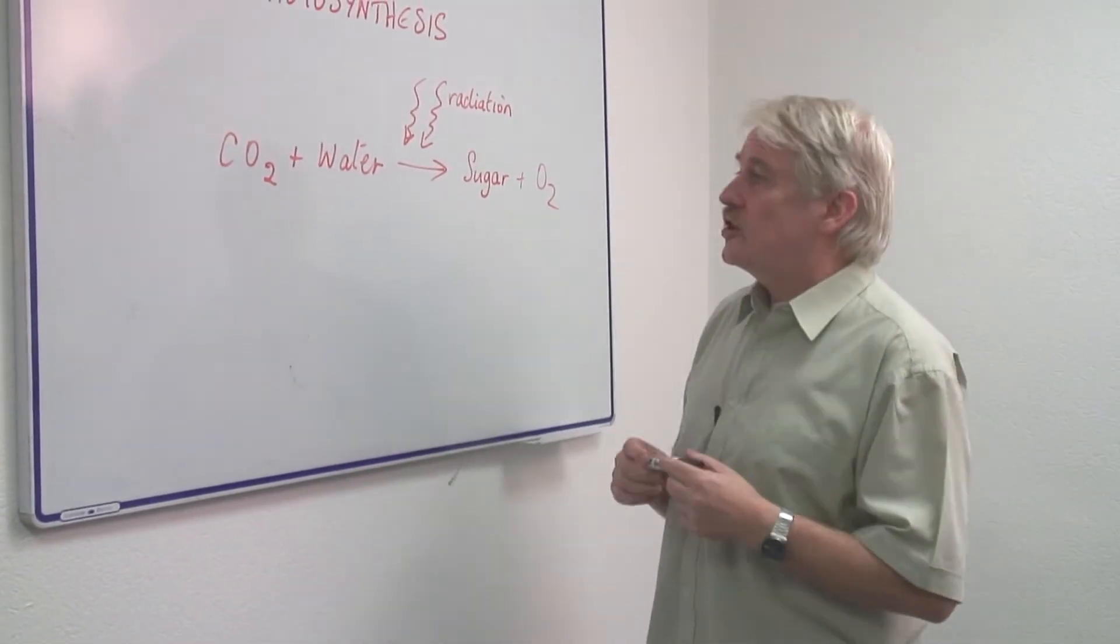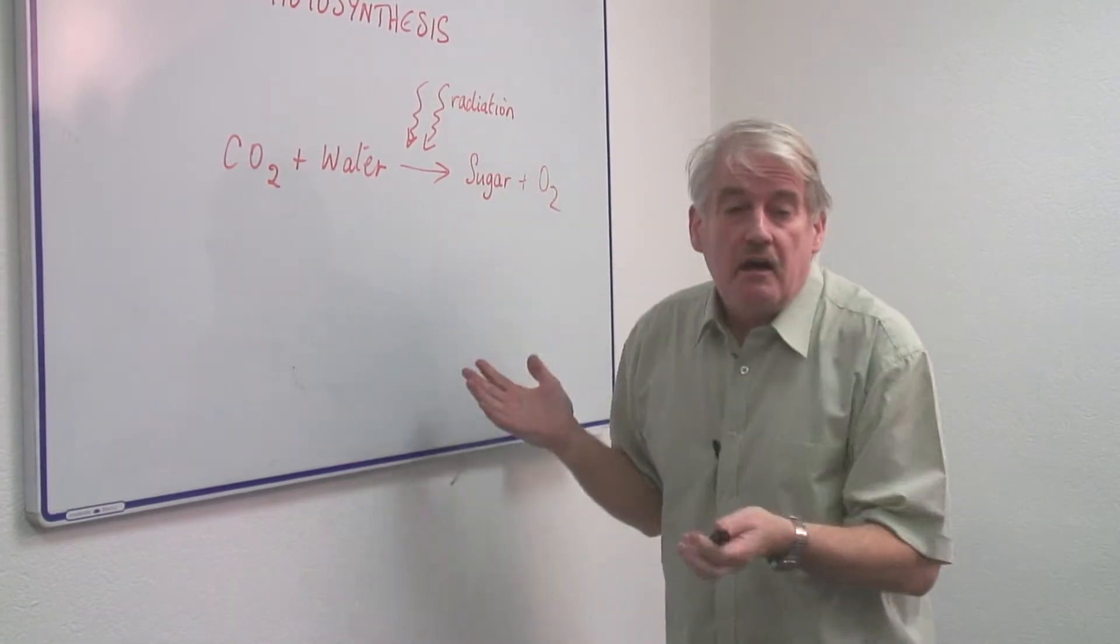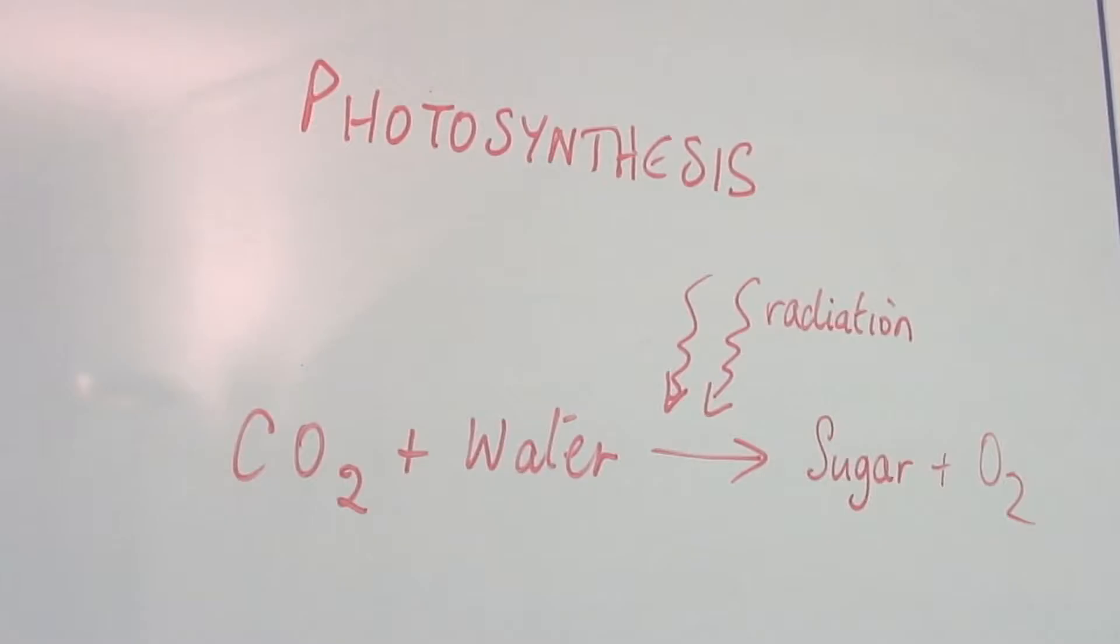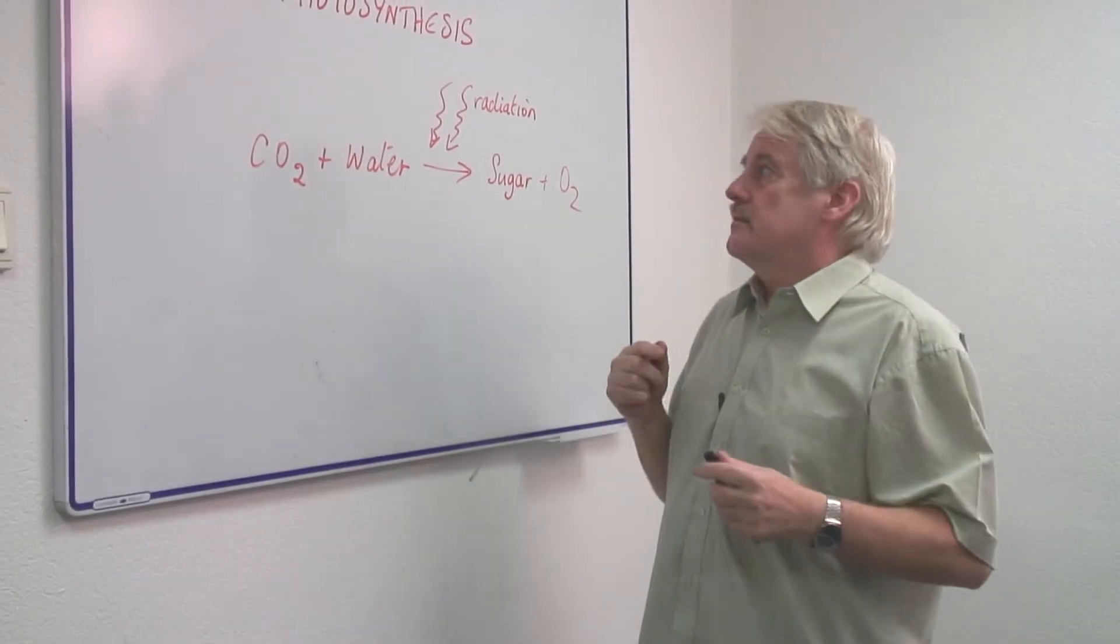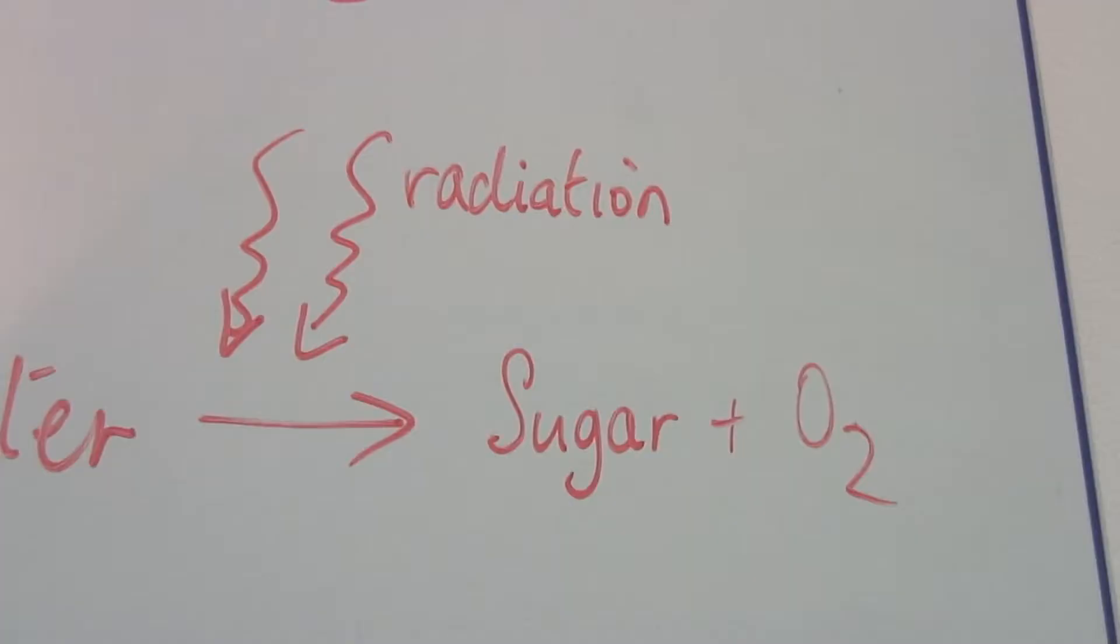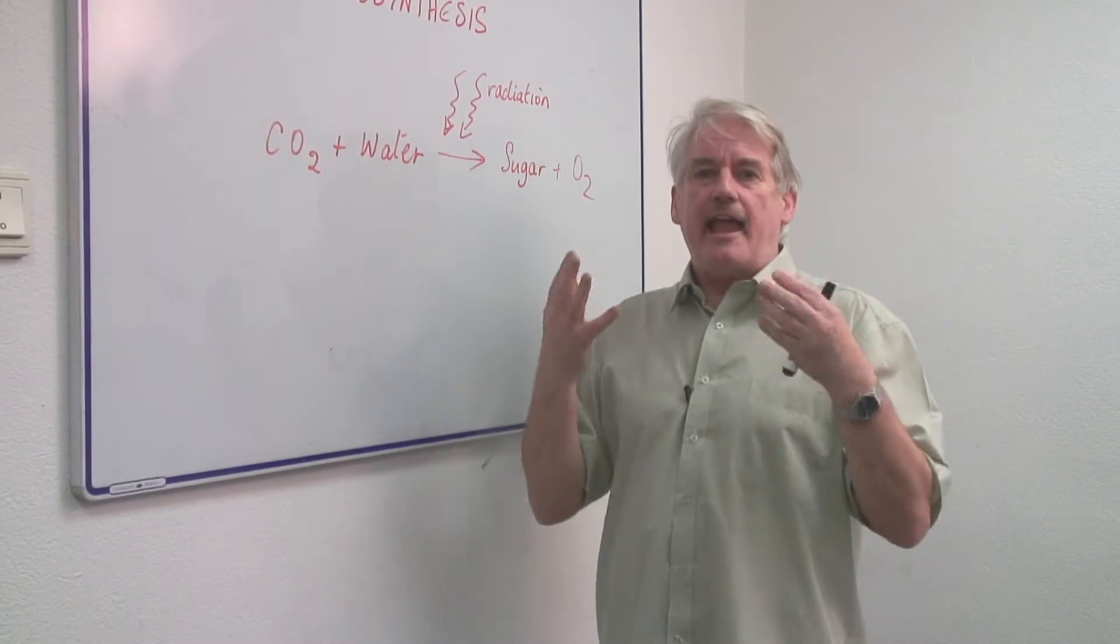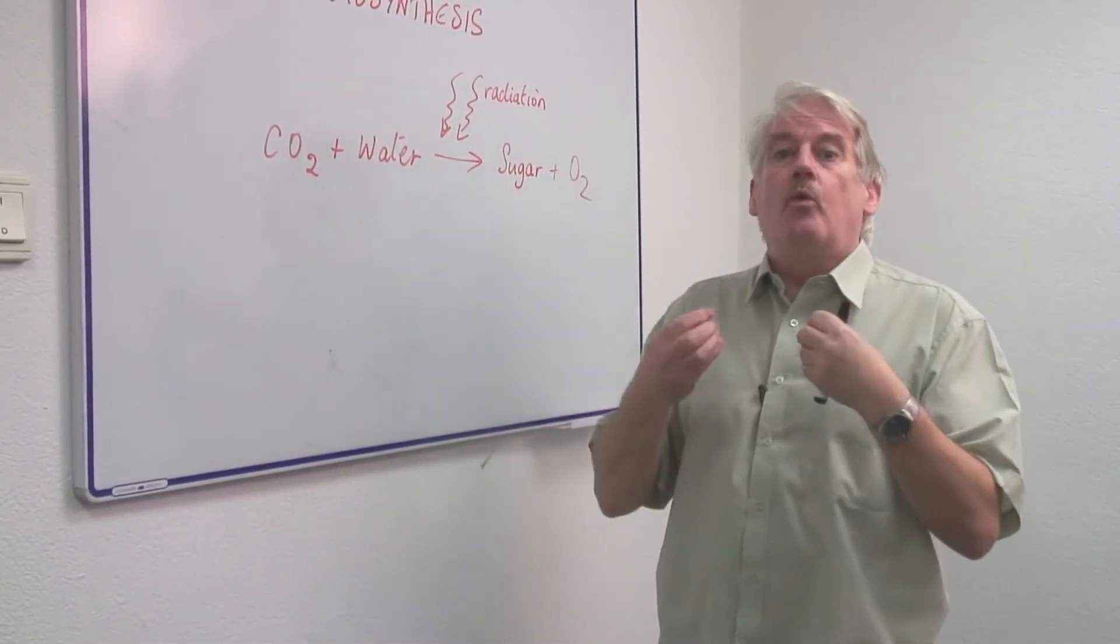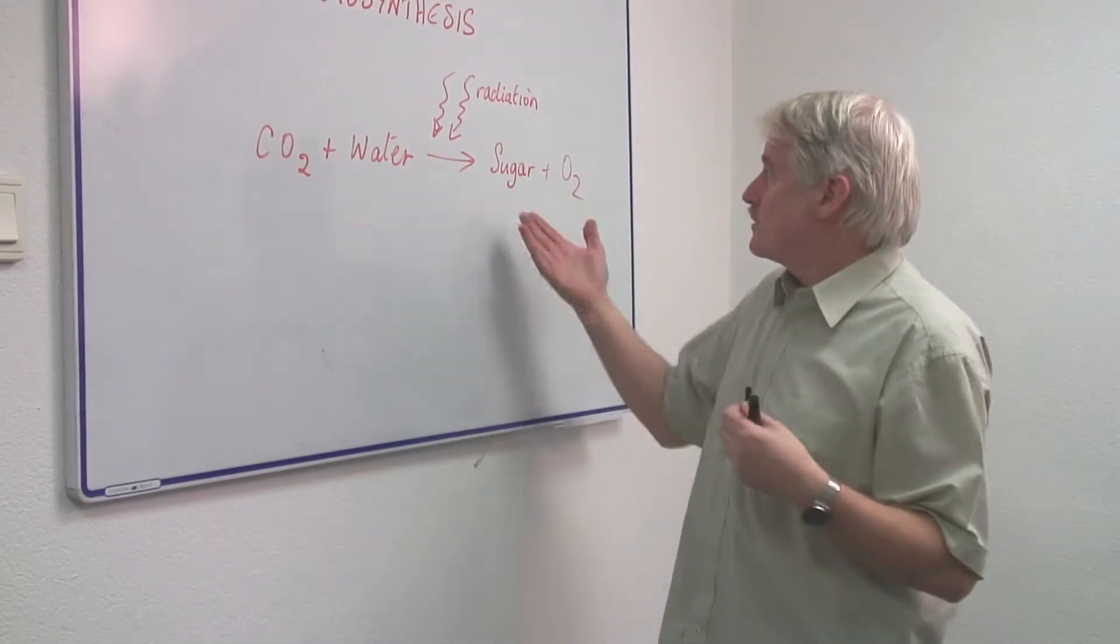Photosynthesis is the thing which turns carbon dioxide and water into sugar and oxygen. And it does it by using radiation from the sun. So we use the radiation from the sun, the energy from the sun, to convert it into energy we as people can use, that is sugar.